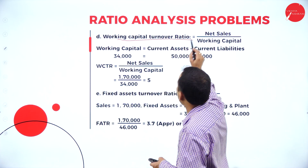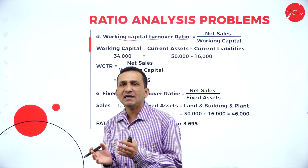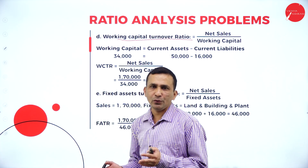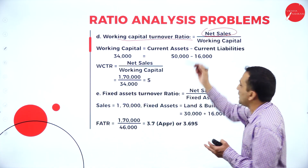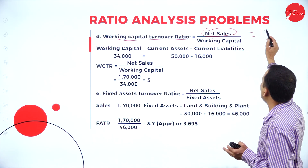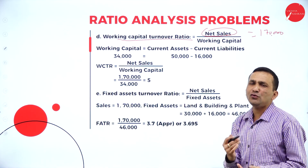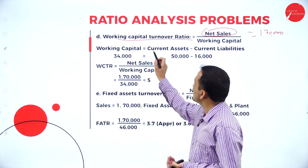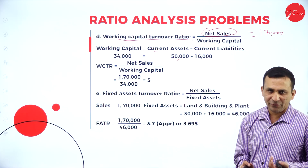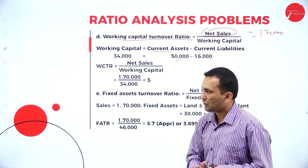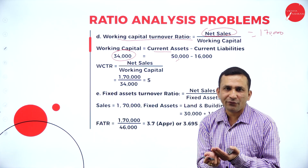Moving to working capital turnover ratio. Working capital is current assets minus current liability. The formula is net sales divided by working capital. Net sales is 1,70,000. We need to find working capital: current assets 50,000 minus current liability 16,000 gives 34,000.